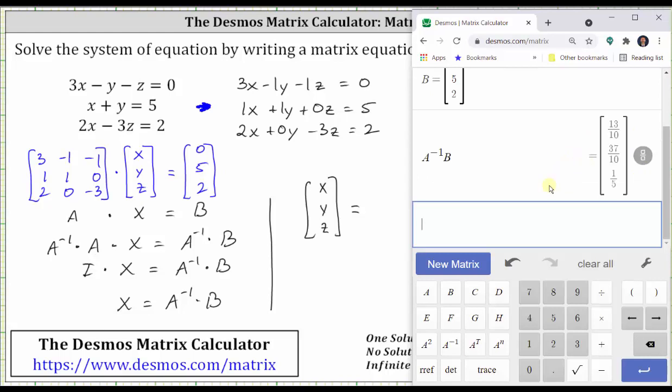So in this case, it's fine to use either the fraction form or the decimal form, because the decimals are exact because they terminate. If they were rounded here though, we would want to use the exact values in fraction form. Because the decimals do terminate, I'll go ahead and use the exact values in decimal form.